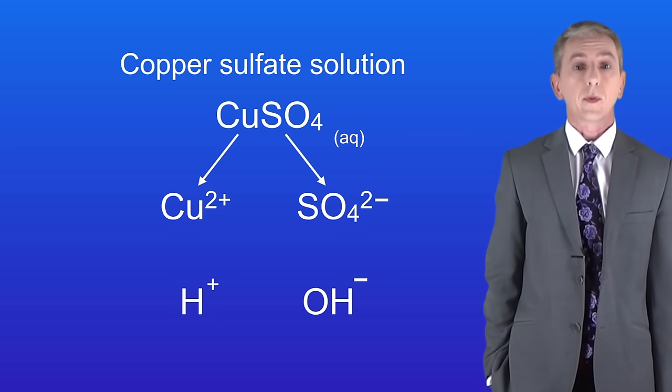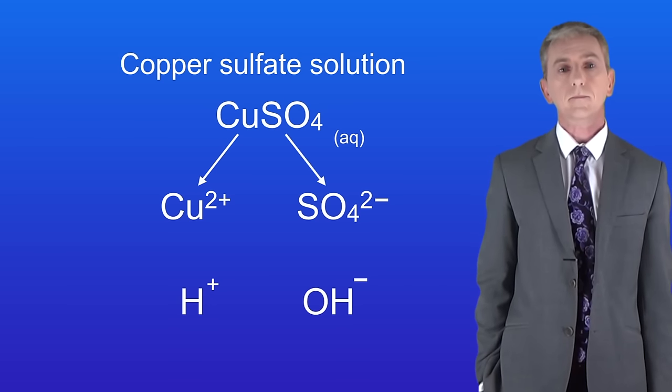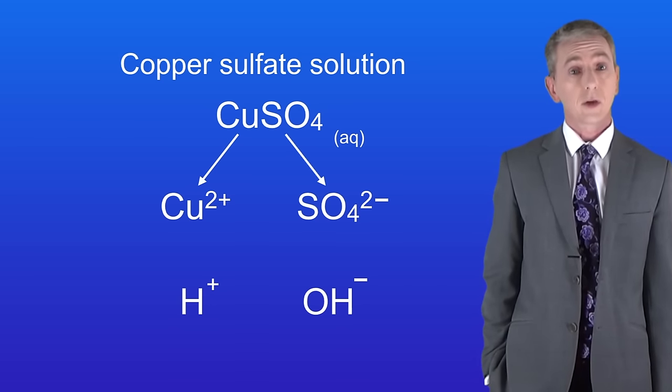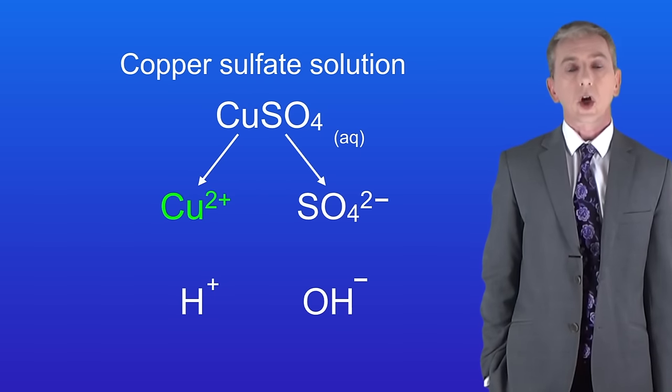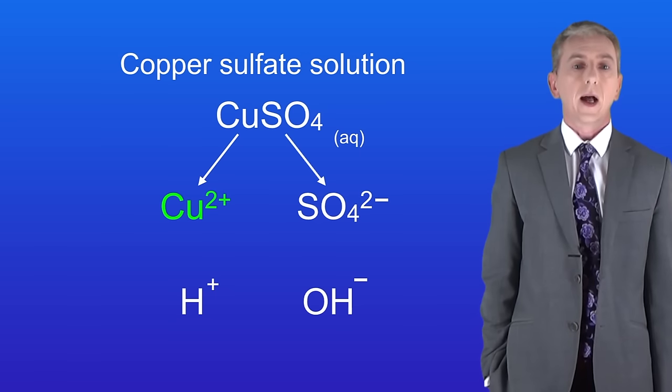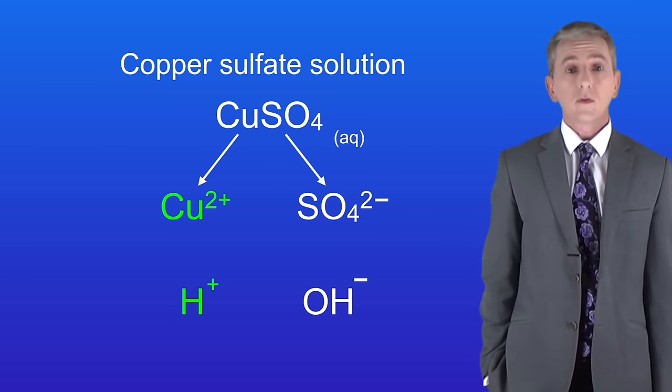So let's see what happens when we carry out electrolysis on this solution. We're going to start by looking at the cathode which is a negative electrode. Our solution contains two different positive ions that will be attracted to the cathode. These are the copper ion Cu2+ and the hydrogen ion H+.